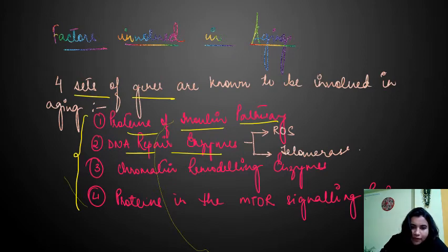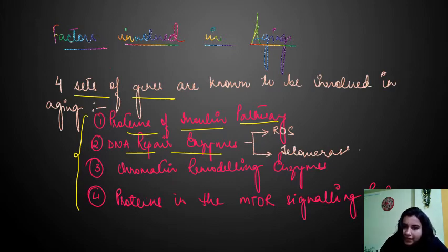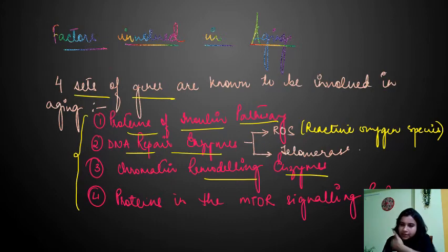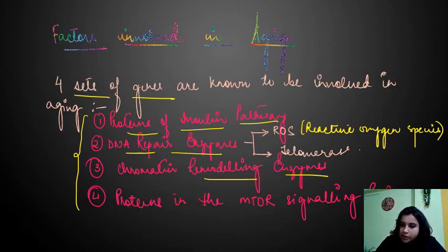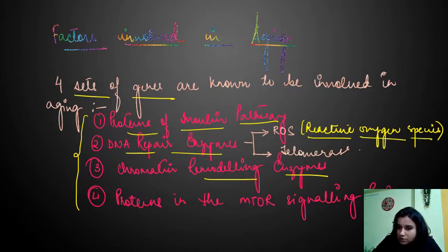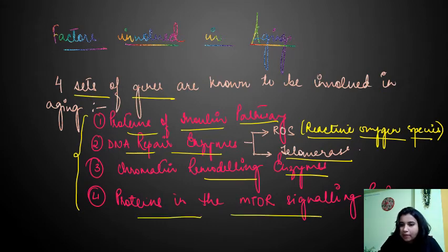The four factors are: proteins of the insulin pathway, DNA repair enzymes (which also involves reactive oxygen species — ROS — and telomerase), chromatin remodeling enzymes, and proteins in the mTOR signaling pathway. If these undergo mutations or non-functionality, premature aging can result. We will discuss mTOR signaling in detail in a later session.